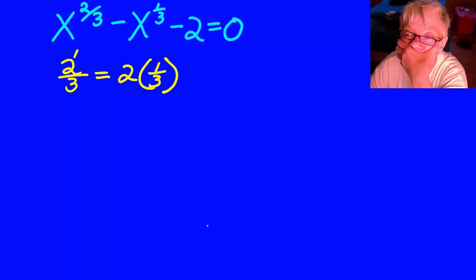Now, we are going to solve a quadratic-like equation that doesn't really look like a quadratic-like equation until you study the relationship of the exponents. Notice that 2 thirds equals 2 times 1 third. This is a 2 to 1 relationship that shows us that this is a quadratic-like equation. x to the 2 thirds minus x to the 1 third minus 2 equals 0 can be changed into quadratic form through u-substitution.